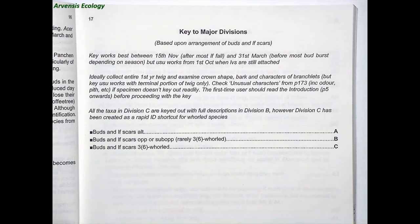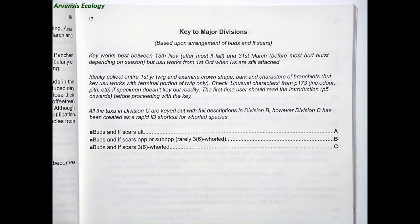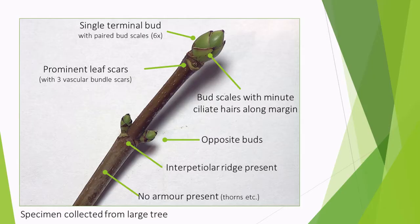Starting on page 17 of John Poland's winter twig guide, we get the key to the major divisions. There are a few warnings: the key works best between the 15th of November after most leaf fall, and the 31st of March when most buds are starting to burst. If you use it before or after, the measurements mentioned can be slightly out because the buds have started to develop. It is possible to use it early in the season but it's more reliable than using it well into April, when buds have swollen too much.